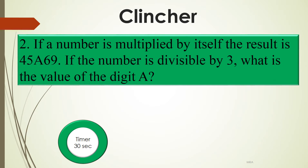If a number is multiplied by itself, the result is 45A69. If the number is divisible by 3, what is the value of the digit A?